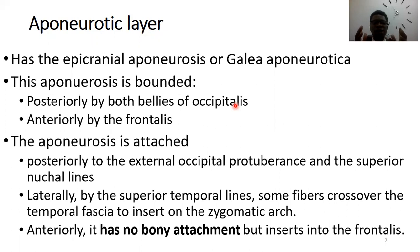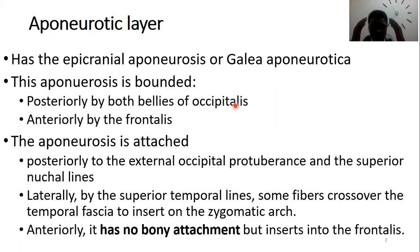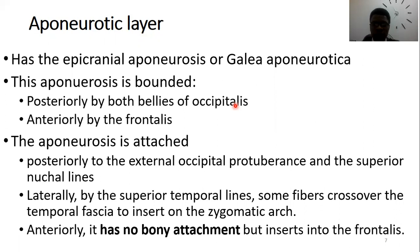Let's look at the different boundaries. Laterally, the aponeurotica is bounded by the superior temporal lines. Anteriorly, it has no bony attachment — it just continues and inserts into the frontalis muscle. Posteriorly, it inserts on the external occipital protuberance and also on the superior nuchal lines.